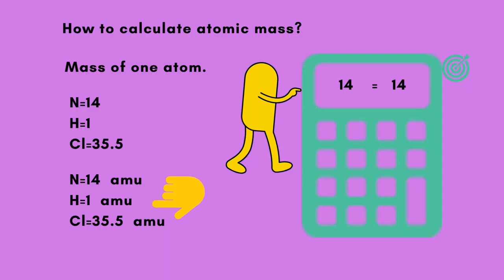How to calculate atomic mass? Mass of one atom. N equals 14, H equals 1, Cl equals 35.5. N equals 14 amu.